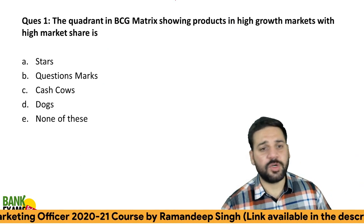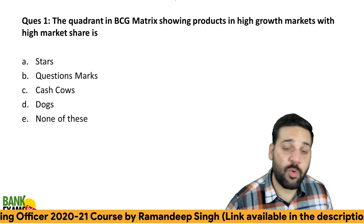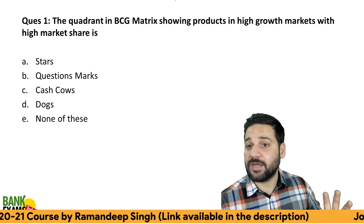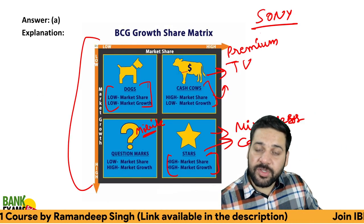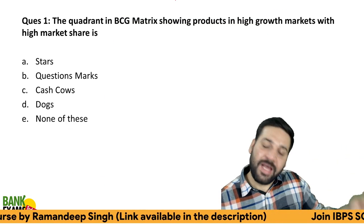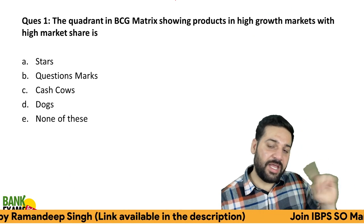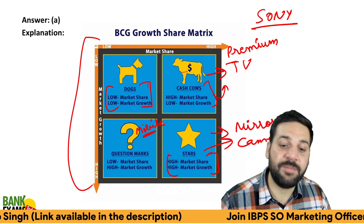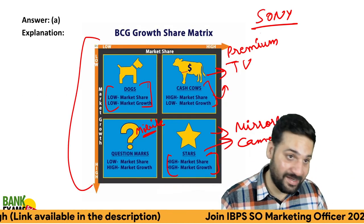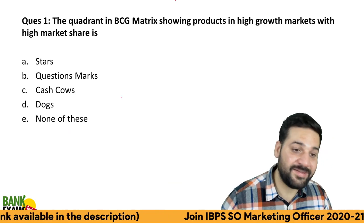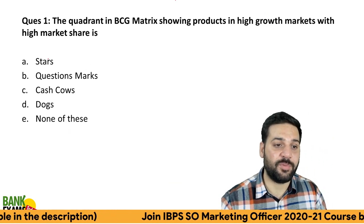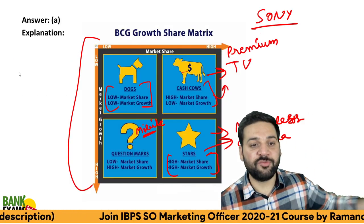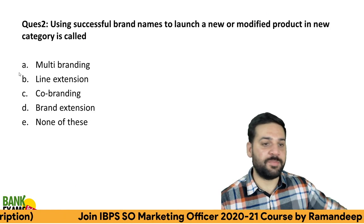So, in the BCG matrix, the quadrant showing products with high growth rate and high market share — that is a Star. Very important point: high growth rate, high market share equals Star. Let's move forward to question number two.